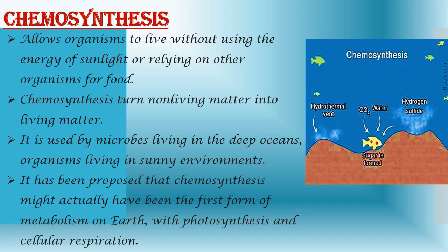Some scientists believe that chemosynthesis might be used by life forms in sunless extraterrestrial environments, such as in the oceans of Europa or underground environments on Mars. It has also been proposed that chemosynthesis might actually have been the first form of metabolism on Earth, with photosynthesis and cellular respiration evolving later as life forms became more complex.